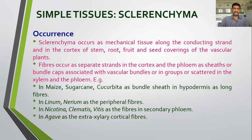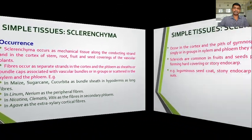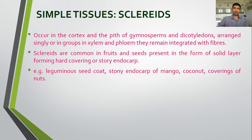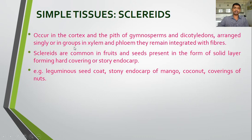In Linum and Nerium as peripheral fibers; in Nicotiana, Clematis, and Retis as fibers in secondary phloem formed after secondary growth; in Agave as extra-xylary cortical fibers. Sclerides occur in the cortex and the pith of gymnosperms and dicotyledons, arranged singly or in groups in xylem and phloem, where they remain integrated with the fibers.